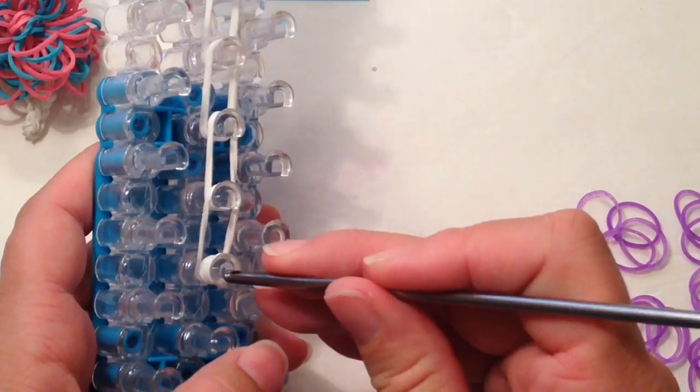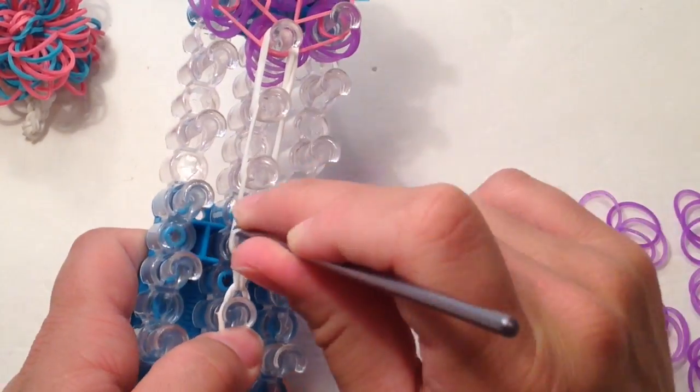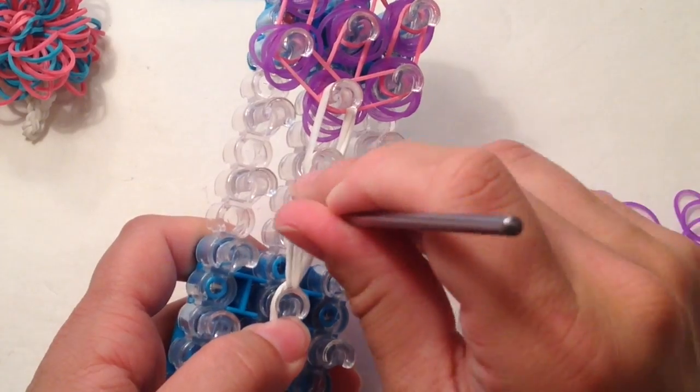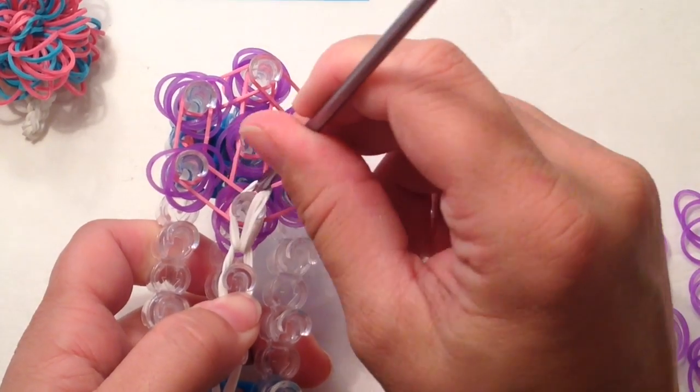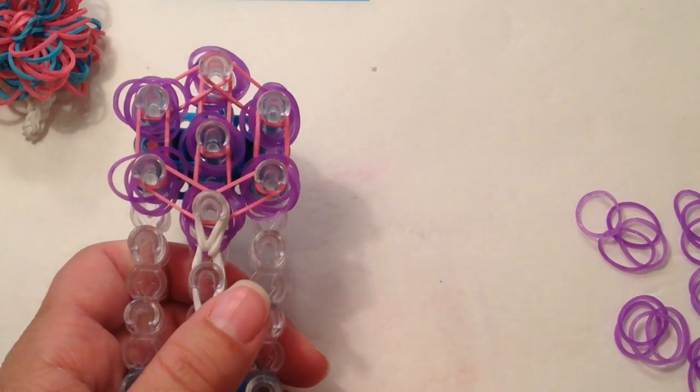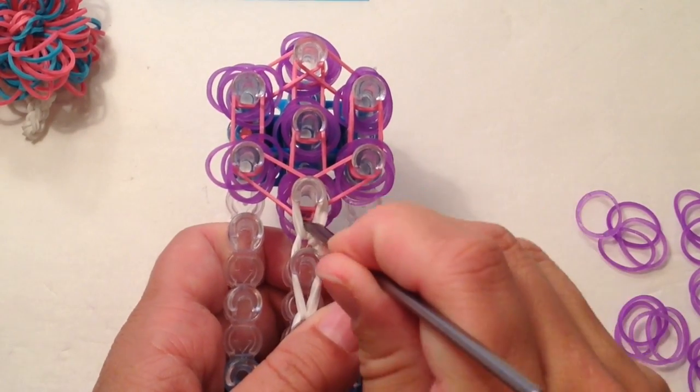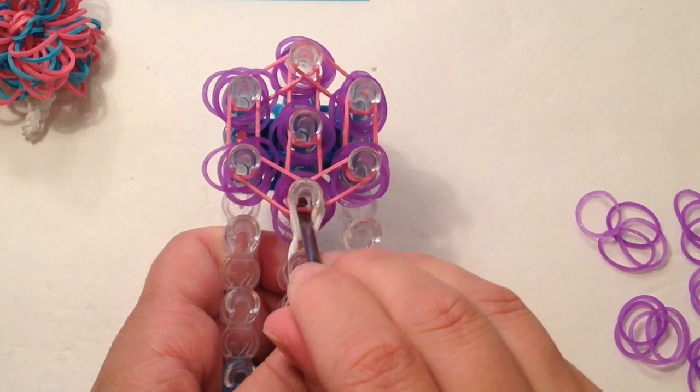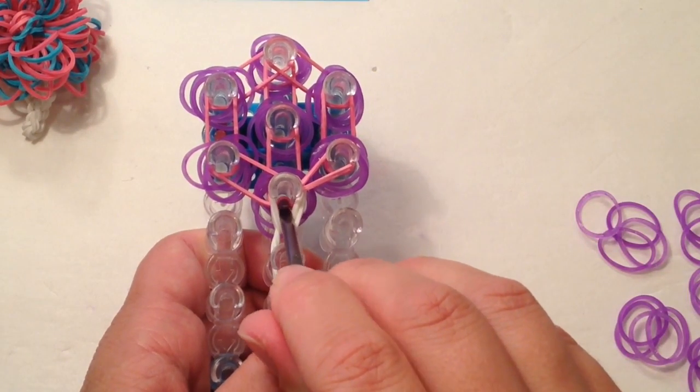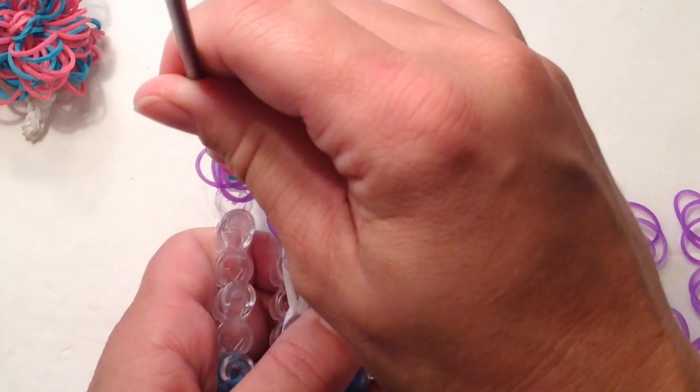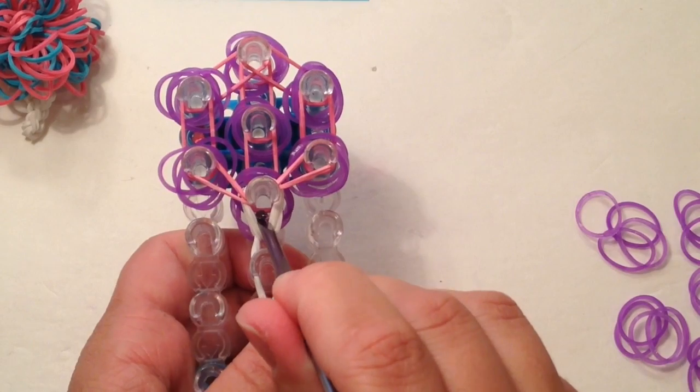Now we're going to be ready to loop. Reach in, come forward, reach in, come forward. Nothing difficult about this part. It's just your basic single chain. You're looping forward. And then we want to stop right here. You want to reach in and get that top pink band. And it is going off to the right. Top pink band, next band. And it is going off to the left.